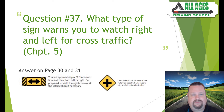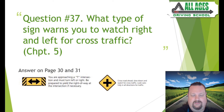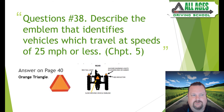Question number thirty-seven: what type of sign warns you to watch right and left for cross traffic? Chapter five, pages 30 and 31. The signs shown include a T-intersection sign — as you approach the end of a road at a T-intersection, watch left and right especially if turning left — and a cross-intersection sign. Both warn of cross traffic coming from the sides.